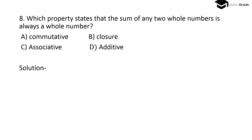Question number 8: Which property states that the sum of any two whole numbers is always a whole number? This is the closure property. Whole numbers are closed under addition and multiplication. So the sum of any two whole numbers always being a whole number is the closure property. Option B is the correct option.